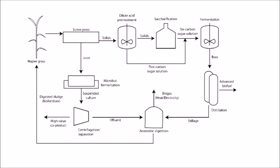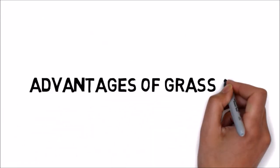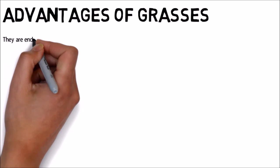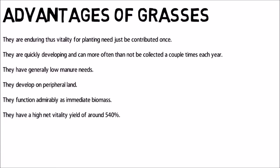The advantages of grasses are: They are enduring thus vitality for planting need just be contributed once. They are quickly developing and can more often than not be collected a couple times each year. They have generally low manure needs. They develop on peripheral land. They function admirably as immediate biomass. They have a high net vitality yield of around 540 percent.